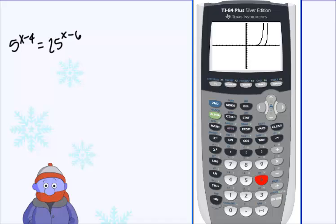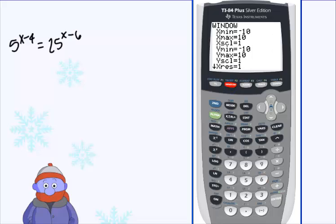And it's hard to tell if they intersect or not. It looks like they may, it looks like they might, but there's a gap in there. I'm not sure. And so what we're going to do is hit the window key and adjust our window settings just a little bit.